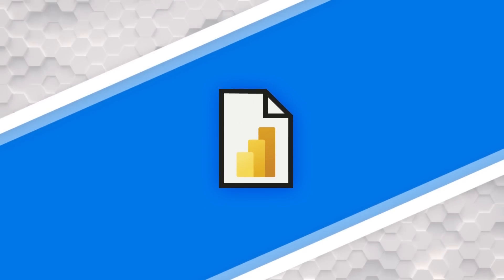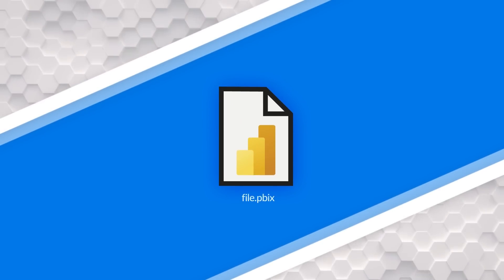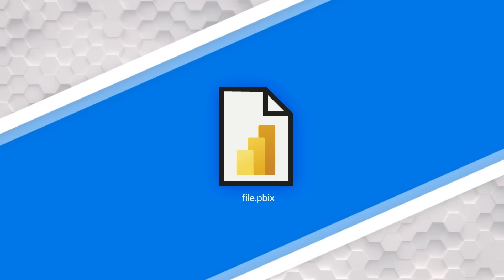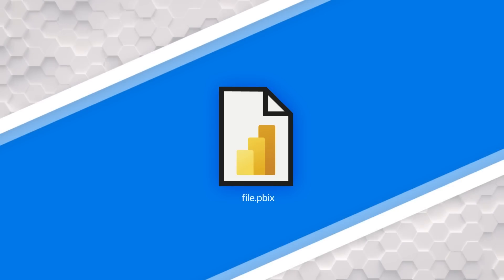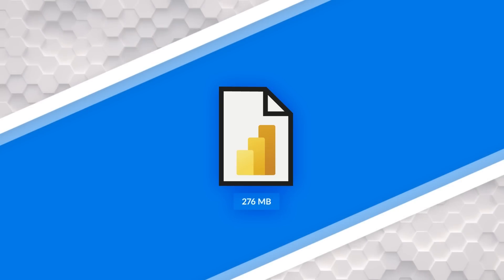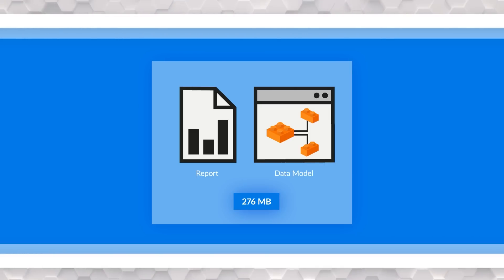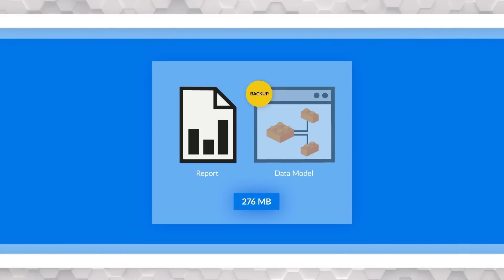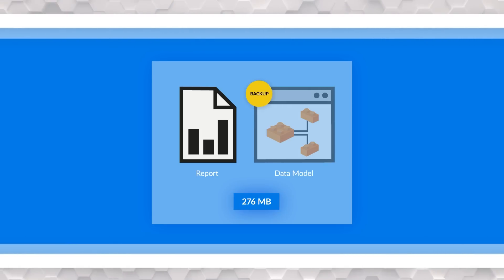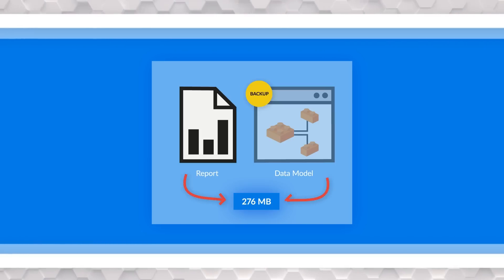Let's start with the file that you had at the beginning — this PBIX file on your machine. The size of this file was 276 megabytes. Within the PBIX file, we actually have everything: the report and the data model. The data model is stored within the file and it is technically a backup of the model that you have in memory. We don't see that or know the size of that separately, but it's within that 276 megabytes.